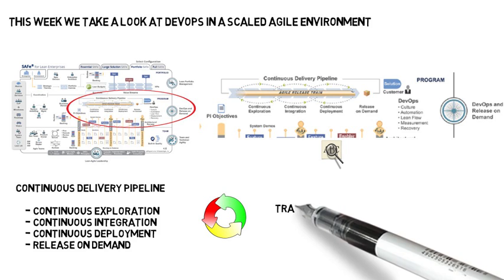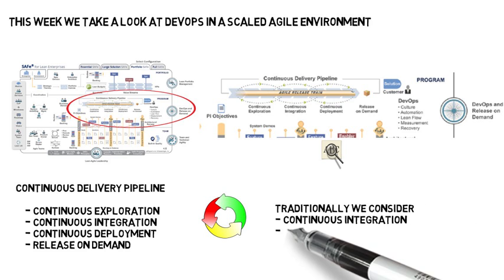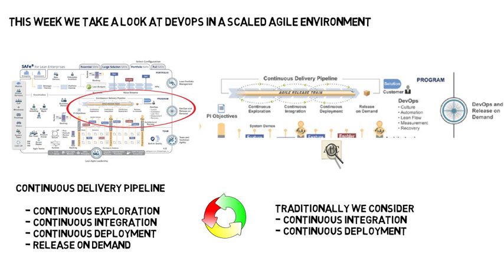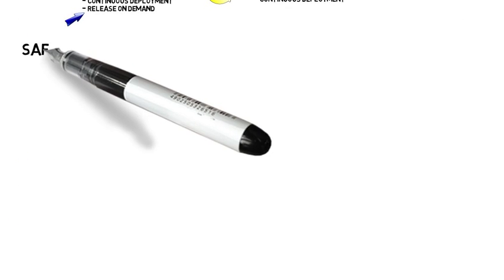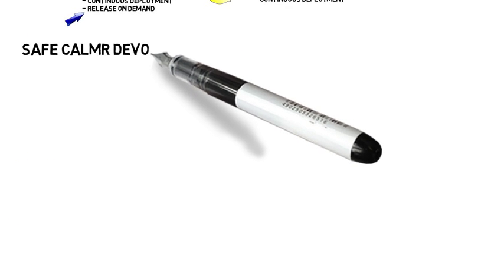Traditionally we consider continuous integration and continuous deployment, and both of these are things that are covered. But continuous exploration is really added by Scaled Agile, adding things like ideating and design thinking type ideas. Also release on demand means we want to release at large scale — not just because it's deployed, but we're actually going to release on demand of the business.